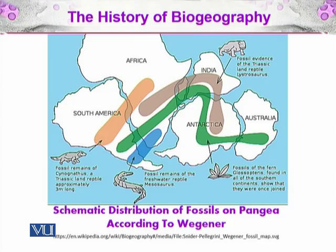For example, the fossil remains of Cynognathus were present in both Africa and South America, and both can be seen. The fossils were evidence for Pangaea — they gave evidence to say that all the continents were part of the same plate, making a mega-continent called Pangaea. This was the diagram according to Wegener.